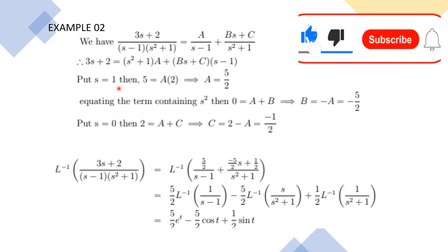To find A, set s − 1 = 0, so s = 1. Substituting s = 1: 3(1) + 2 = 5, and A × (1² + 1) = 2A. So 2A = 5, giving A = 5/2. Now equating coefficients of s²: on the left side there is no s² term, so its coefficient is 0. On the right side the coefficient of s² is A + B. Therefore B = −A = −5/2.